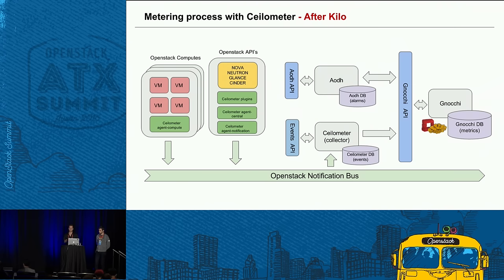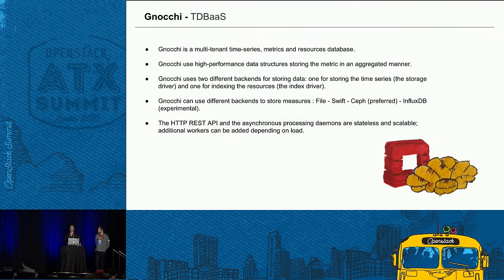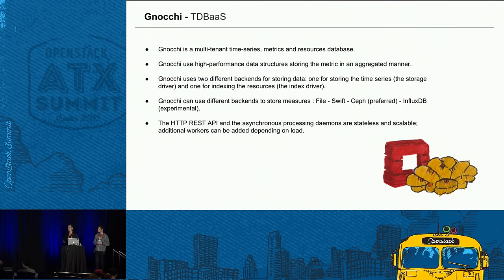This architecture is more modular — each module has its own database, its own storage backend, and a specific role storing a specific kind of data. Gnocchi is a multi-tenant time series metric and resource database for OpenStack. The key change is that Gnocchi stores metrics in a time series format in an aggregated manner, enabling it to store large quantities of data while being easily scalable and without losing performance.